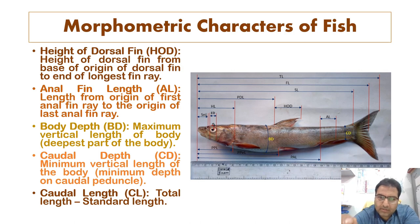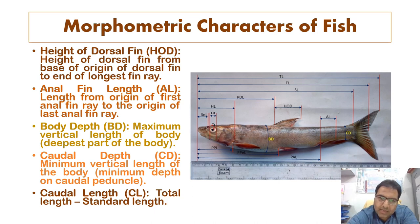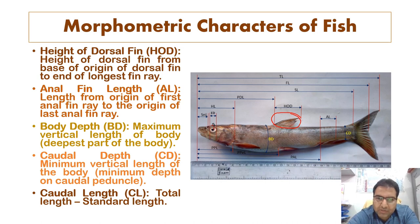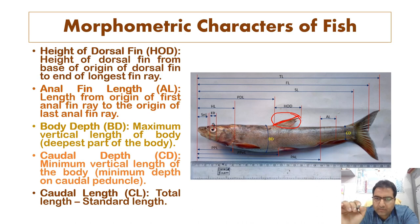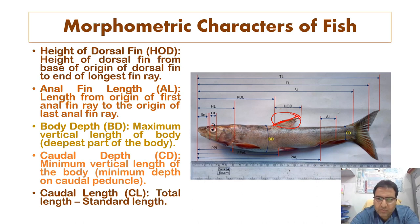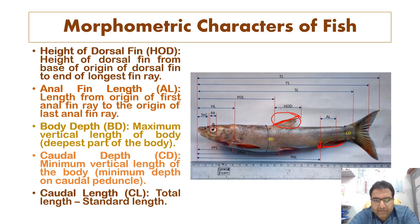Pre-anal length is measured from the snout up to the origin of the anal fin — from the snout to the origin point of the anal fin. The height of the dorsal fin is measured from the base of its origin to the end of the longest dorsal fin ray. Many fish have two dorsal fins; the height is taken to the longest ray. Similarly, anal fin length is measured from the origin to the last anal fin ray.